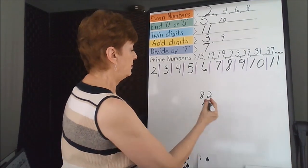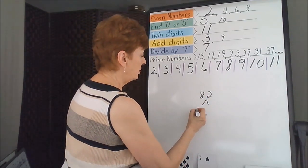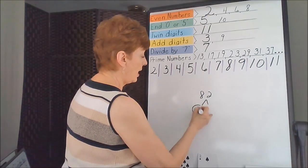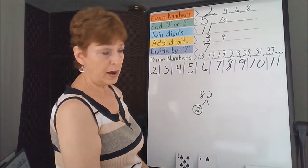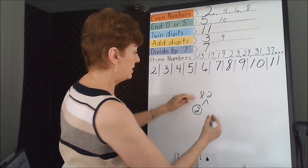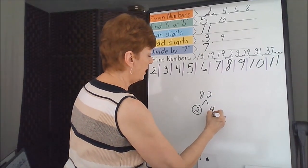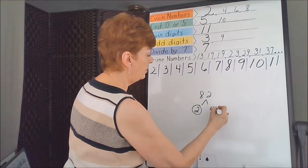82 is an even number. Let's use 2 - I know it's prime, I'm going to circle it right away. 2 divides into 8 four times, 2 divides into 2 one time.